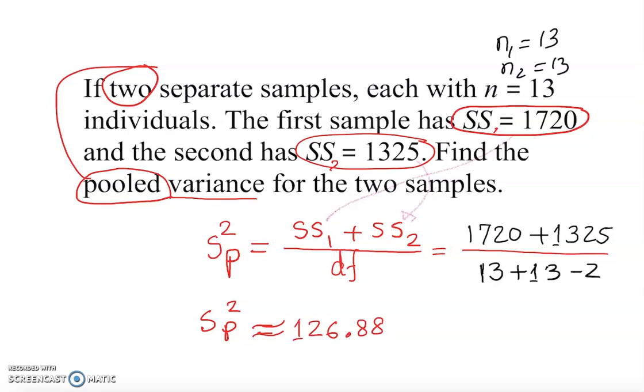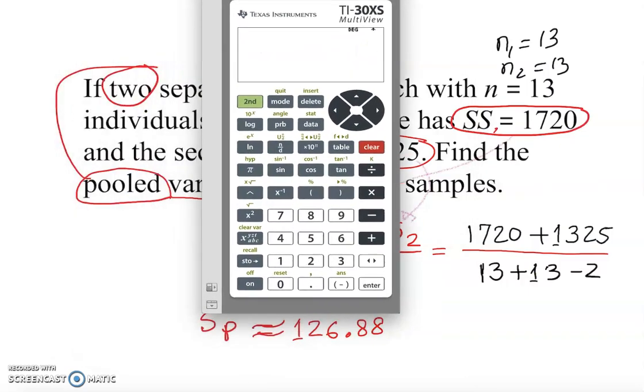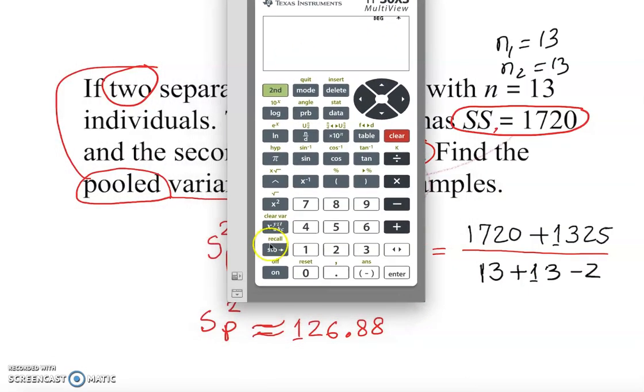So let me show you actually how to use calculator and get this. Okay, so if you have a calculator that has n over d, it's easy, simple, you don't worry about the parentheses. So n over d.